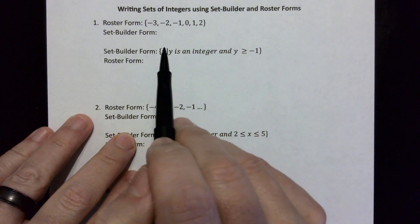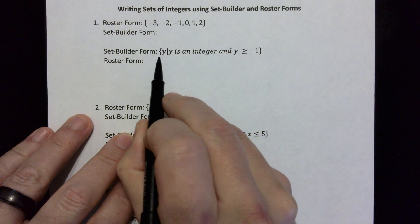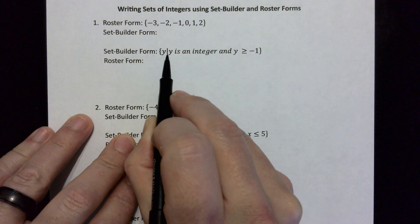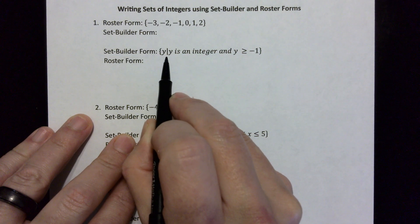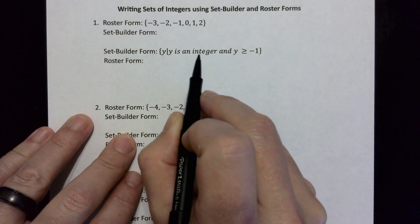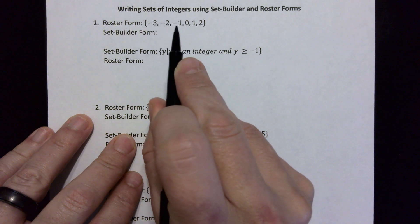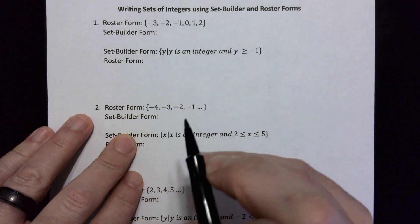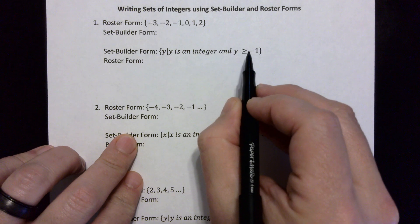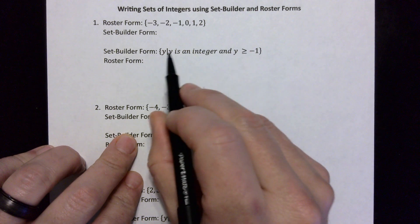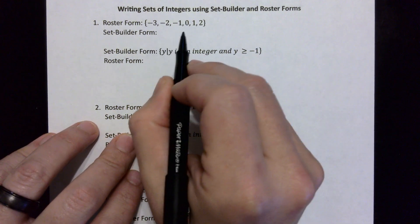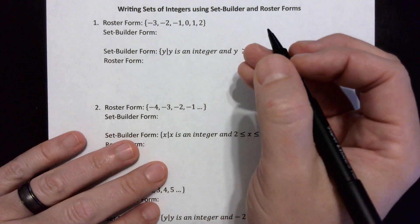Here's an example of set builder form. I can read it out in words: 'y such that y is an integer' — that little vertical line means 'such that' — and then it says y has to be greater than or equal to negative one. Integers are whole number values whether positive or negative, like negative three, negative two, and so on.